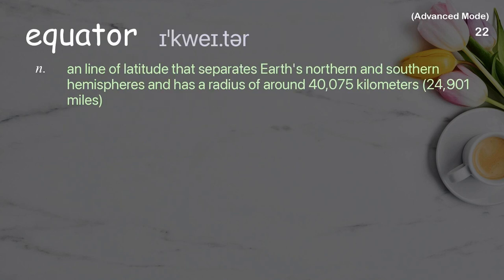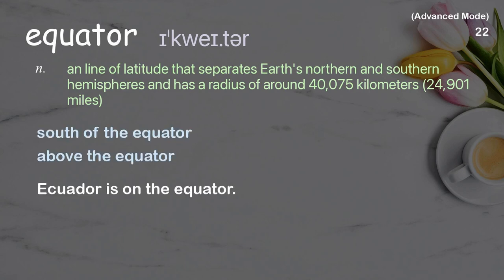Equator: A line of latitude that separates Earth's northern and southern hemispheres and has a radius of around 40,075 kilometers (24,901 miles). Examples: South of the equator. Above the equator. Ecuador is on the equator.